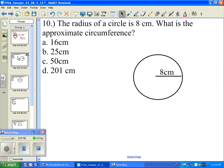The radius of the circle is 8 centimeters. What is the approximate circumference? Here they're giving you the radius, which is 8 centimeters. They want to know the circumference. Well, the circumference again is just this outside edge of the circle.